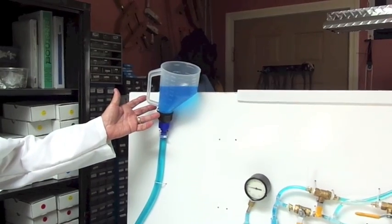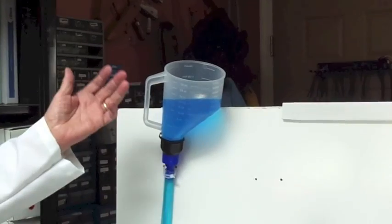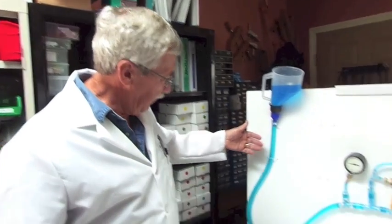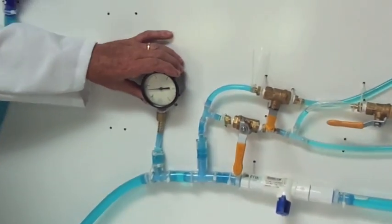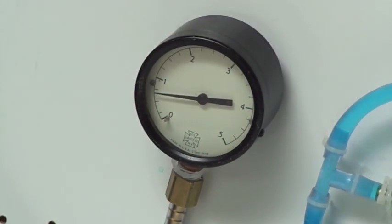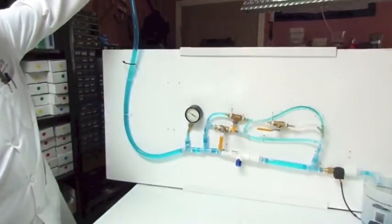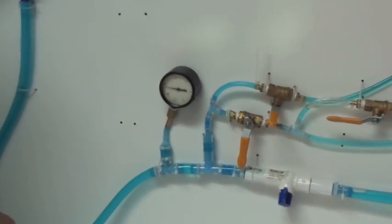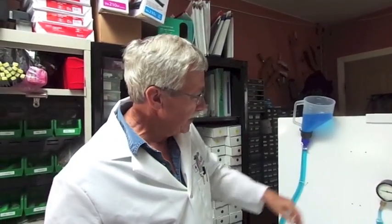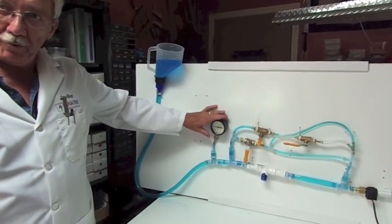We have here a power source. In electronic terms that would be a voltage source of some sort, a battery or a power supply or whatever. That feeds through the circuit. Here's a pressure meter. This is measuring hydraulic pressure from the water. And as a matter of fact, if I increase the height of the water, you can see the pressure goes up.